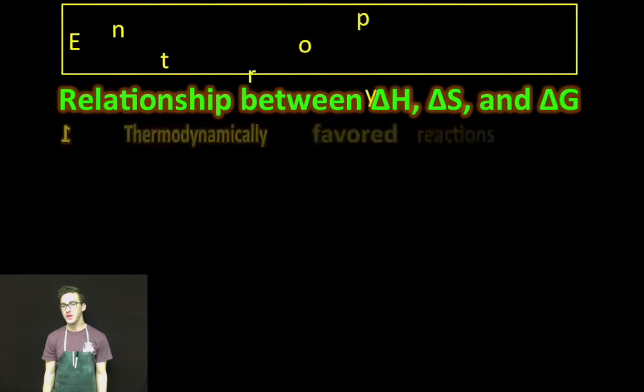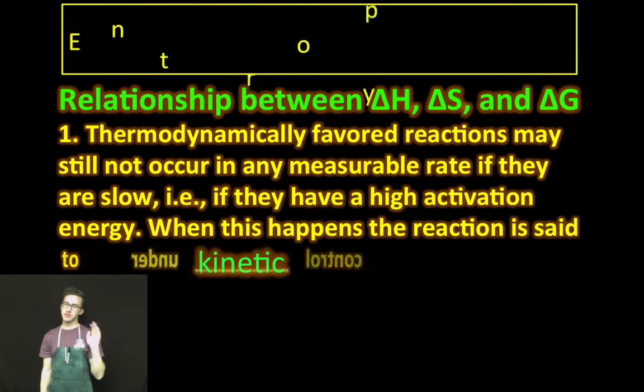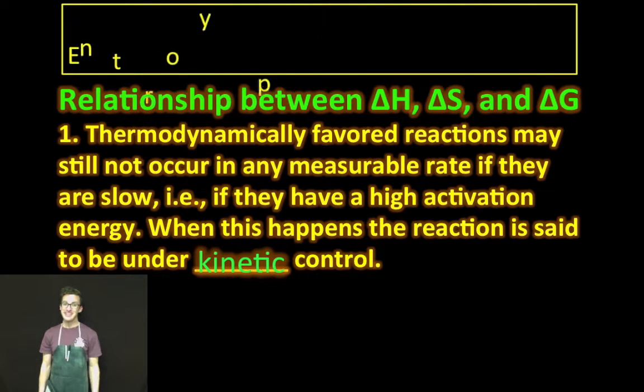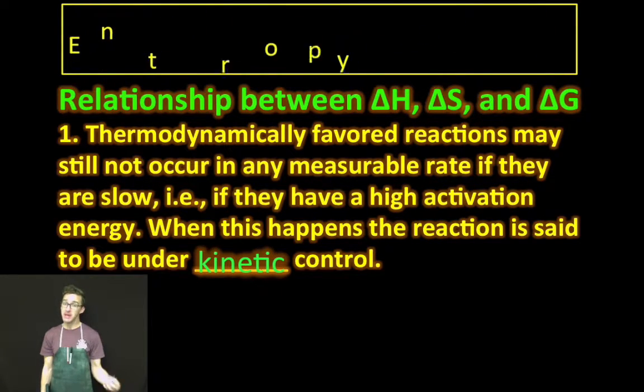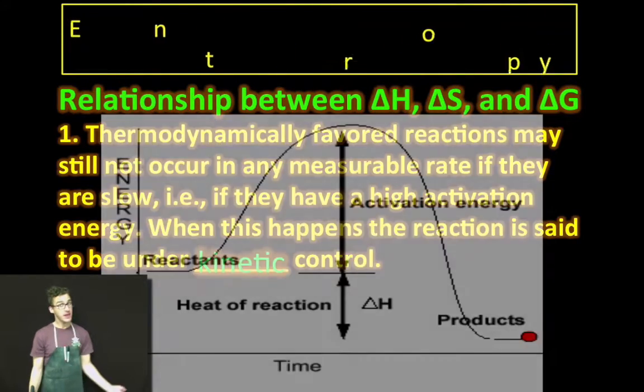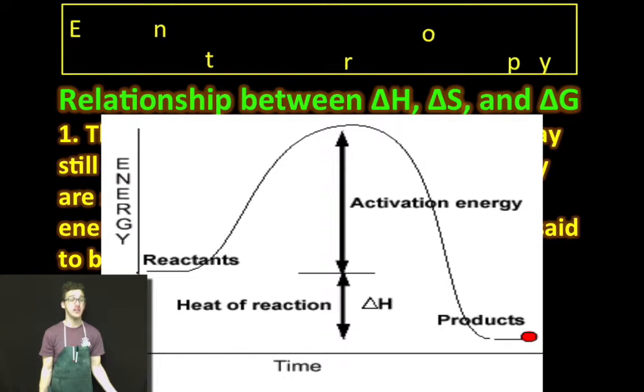Just a few quick things to think about as you try to get the relationship between these three different things straight in your brain. Even if you determine a reaction to be thermodynamically favorable, it still might not occur at any measurable rate. In other words, something could be thermodynamically favorable but happen really slowly if they have, for example, a very high activation energy.